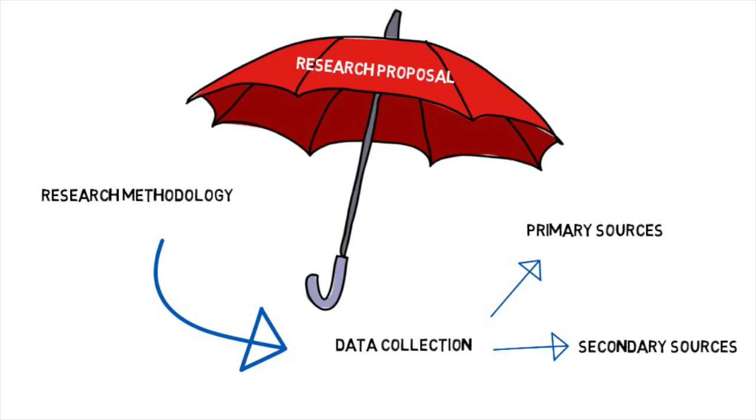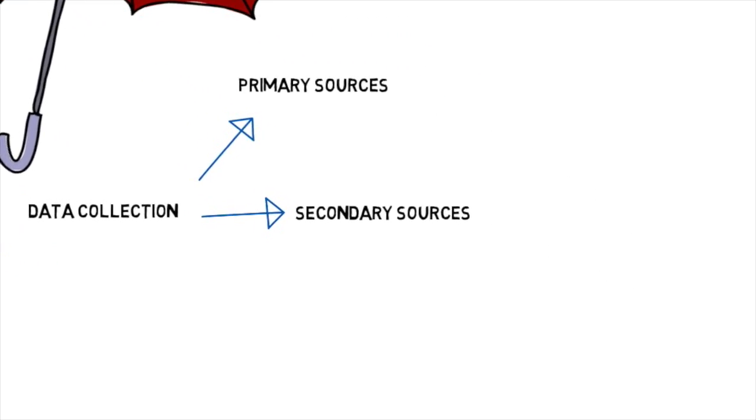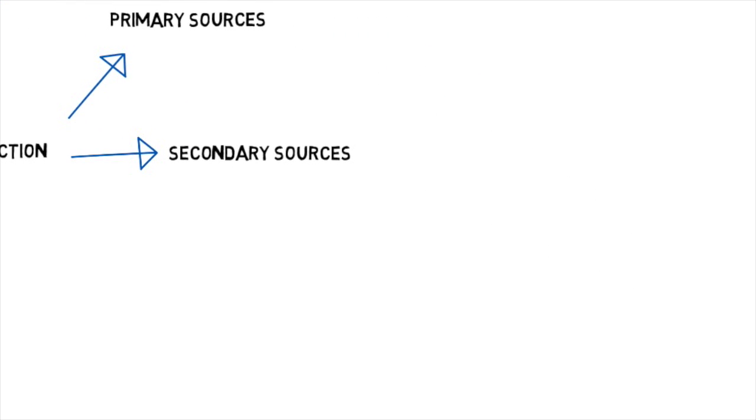A secondary source is data that has been previously collected by someone else for a different purpose. It consists of both published and unpublished data. The advantage of using secondary sources is that they are readily available and do not need to be collected again. However, it may not meet your specific research needs.